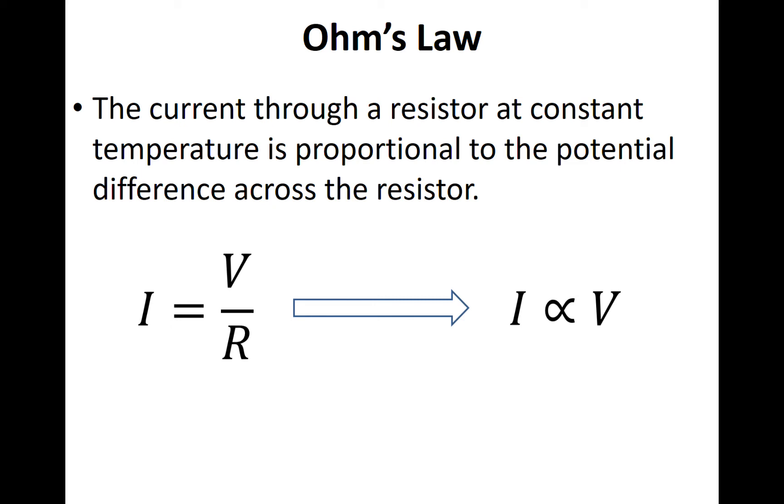The reason we say at constant temperature is because as we know from the previous image, if a material increases temperature, it will in fact increase the resistance of that material. An ohmic conductor, that is any material that obeys Ohm's law, is only true if we consider a constant temperature.